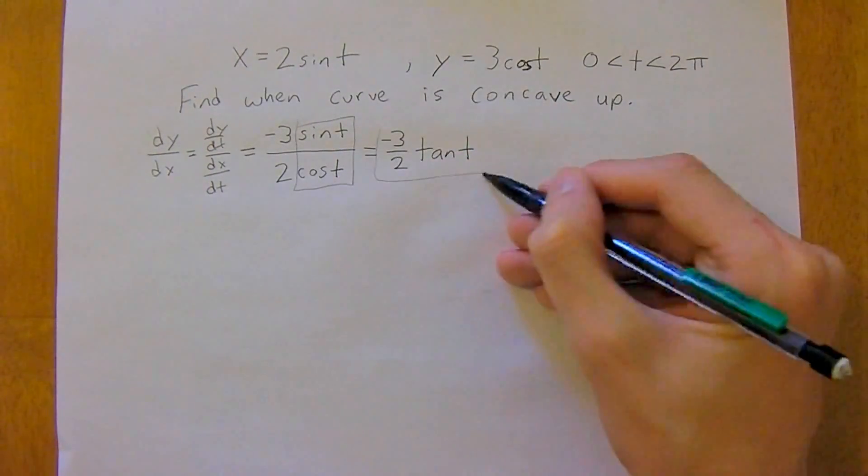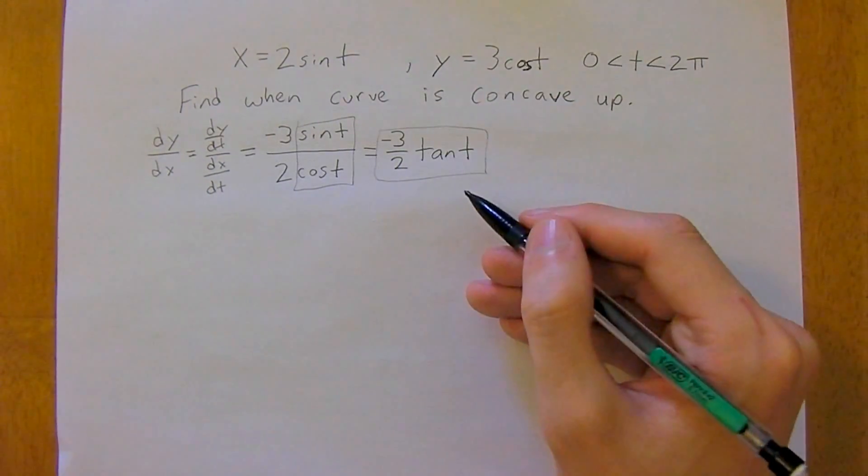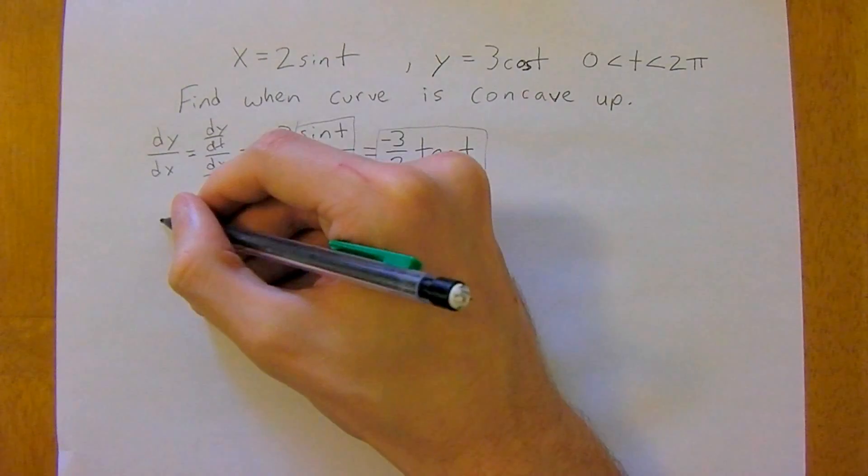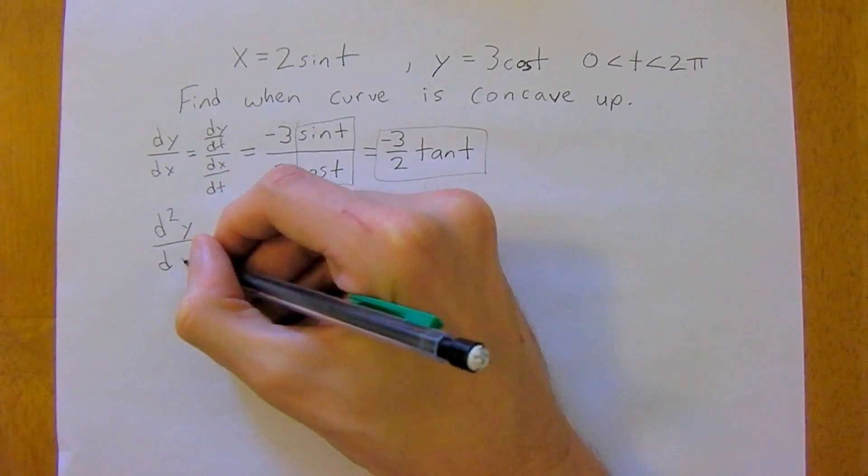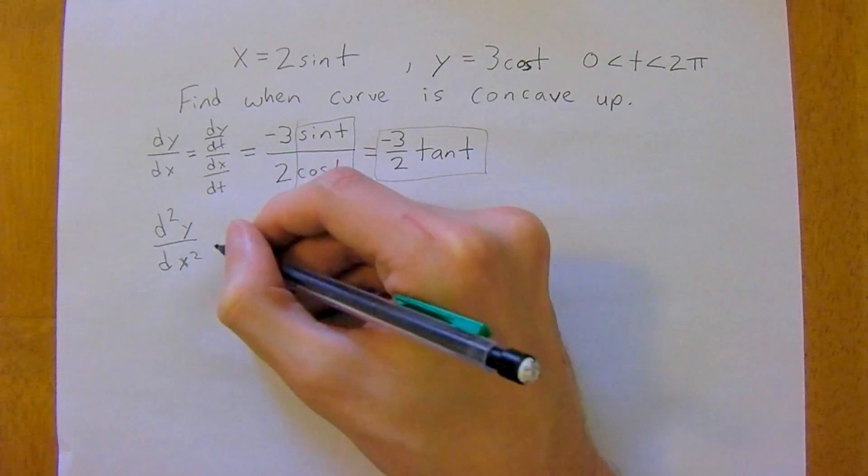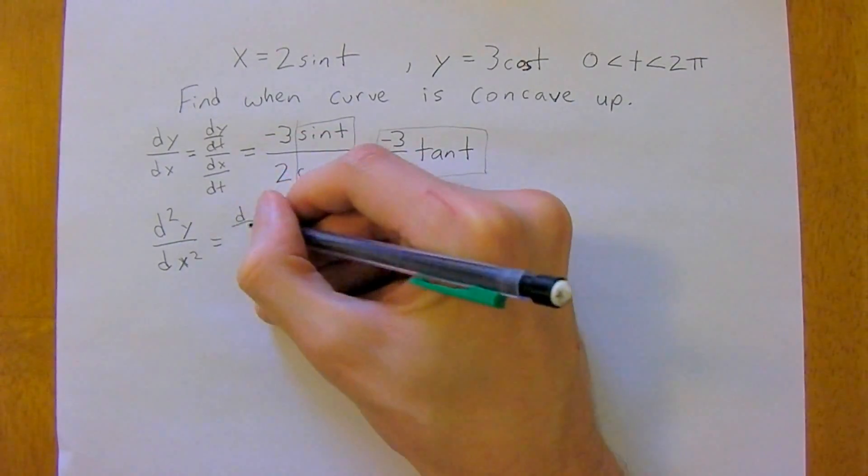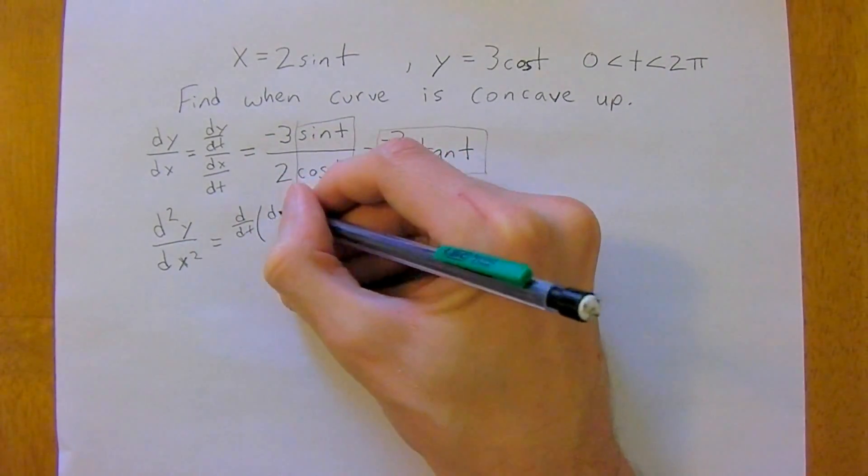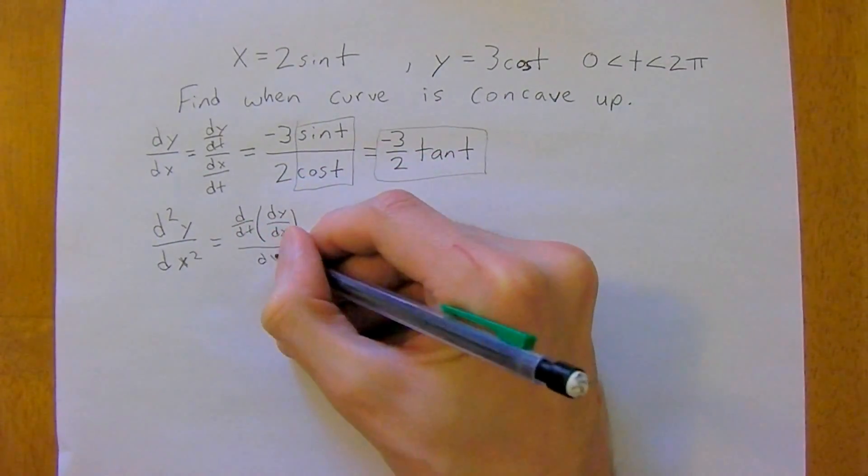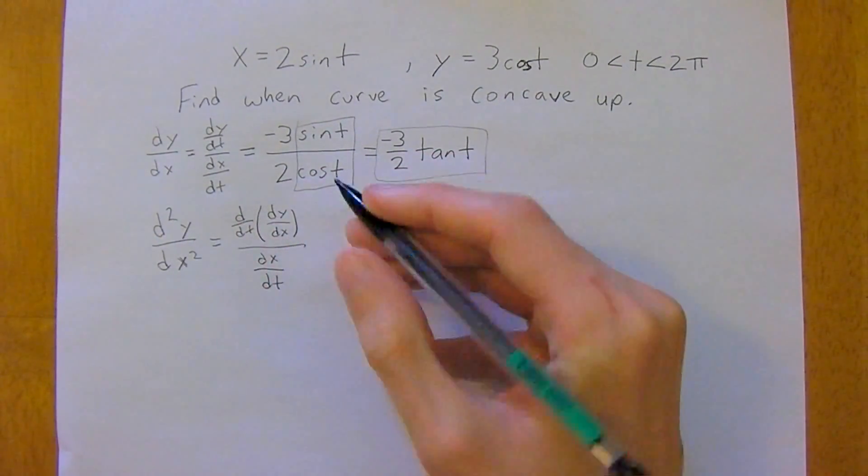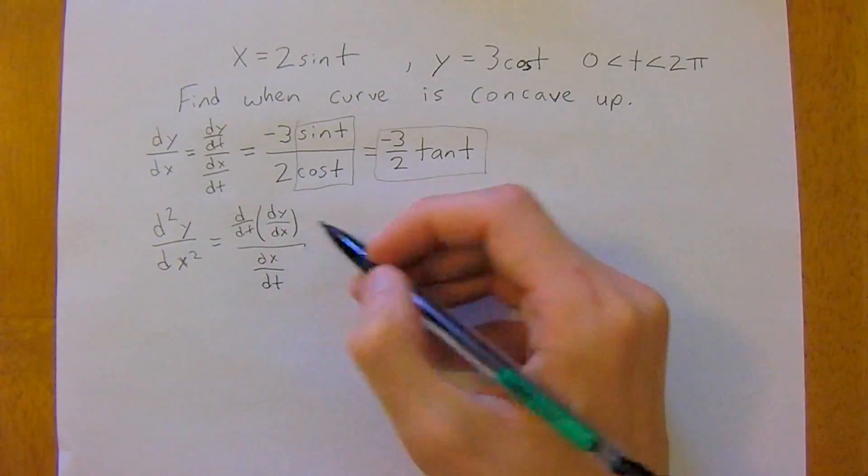And now we're in a good form, we can put this into our second derivative. So we're going to get the second derivative of y with respect to x, which is going to be derivative with respect to t of the first derivative, dy over dx, all divided by dx over dt, which we already worked out as 2 cosine t.